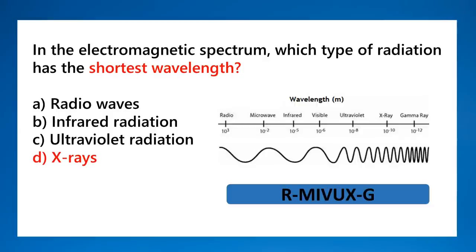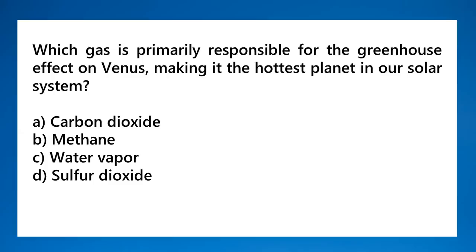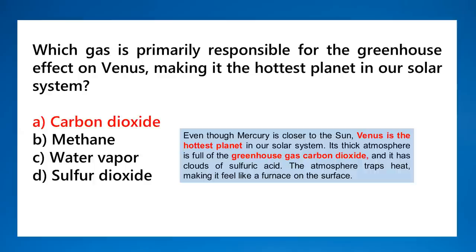Which gas is primarily responsible for the greenhouse effect on Venus, making it the hottest planet in our solar system? That is carbon dioxide. Venus has a thick atmosphere full of carbon dioxide, and it also has clouds of sulfuric acid — which is why Venus appears yellowish in color.